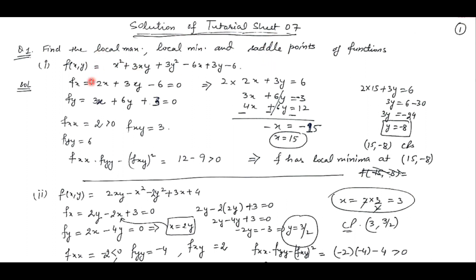Now what is the procedure? We first of all find out the critical points by finding the partial derivative of the function with respect to each independent variable. We will see those interior points where these derivatives are 0 or undefined. So we will find out these partial derivatives, put these derivatives to be 0. We have two equations, solve these two equations and get the value of critical points. At those critical points we need to check whether the function attained maxima, minima or saddle point.